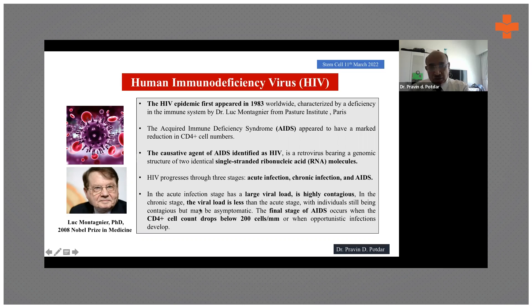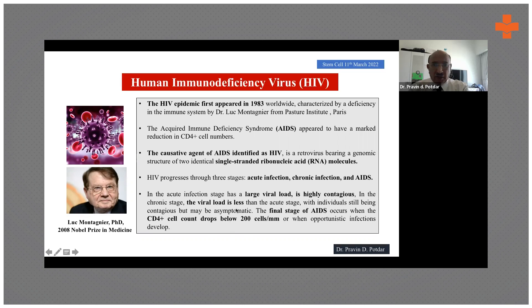In the chronic stage, the viral load is less than in the acute stage, and the individual still carries the virus but may be asymptomatic with not many symptoms. The final stage, AIDS, occurs when the CD4 cell count falls below 200 cells per mm³ and opportunistic infections like CMV and HBV also appear.